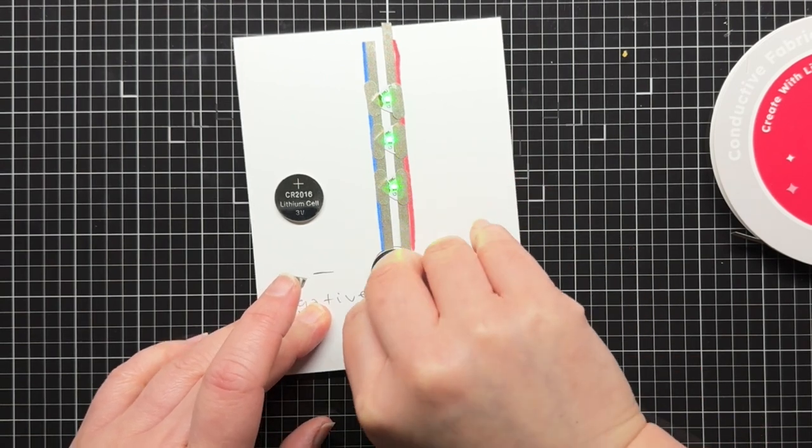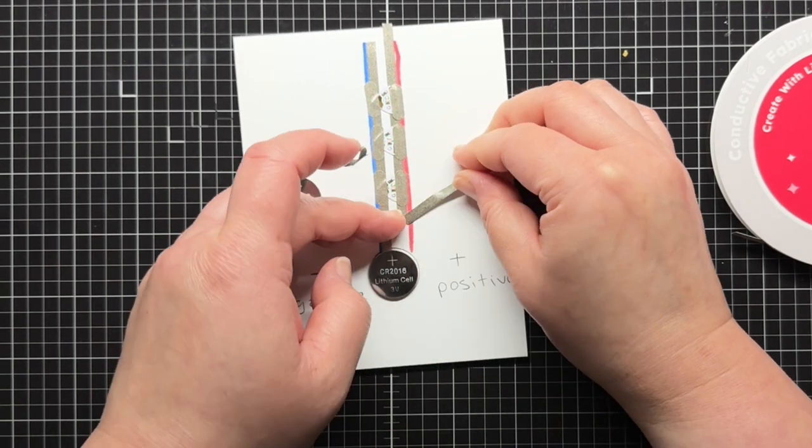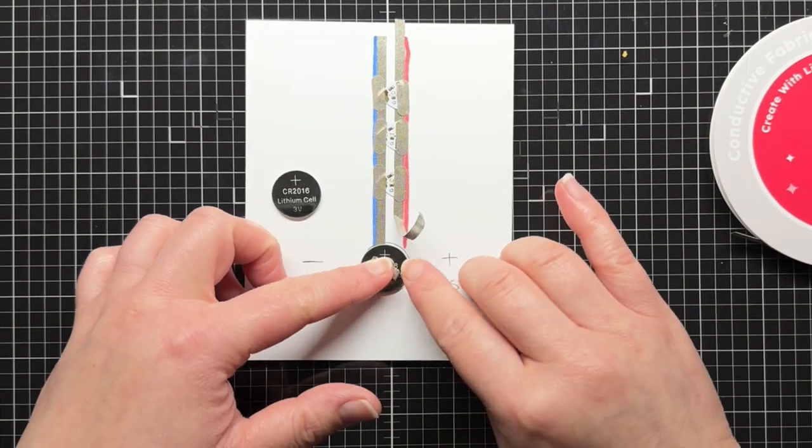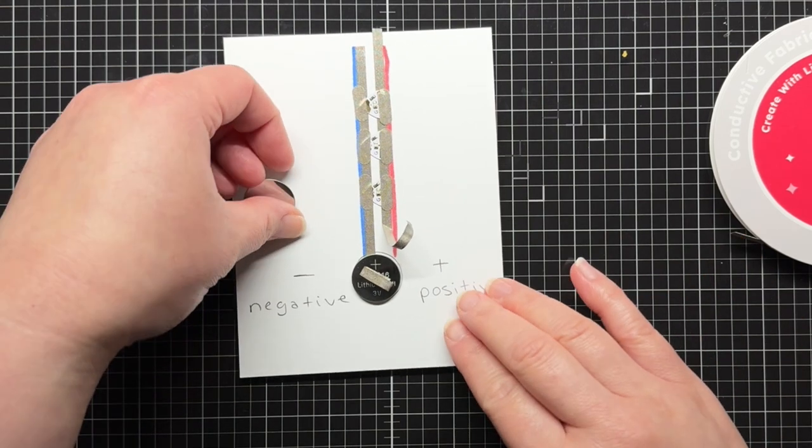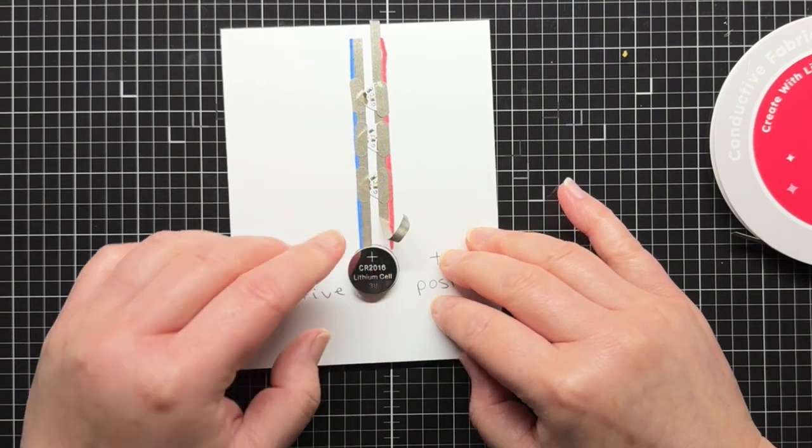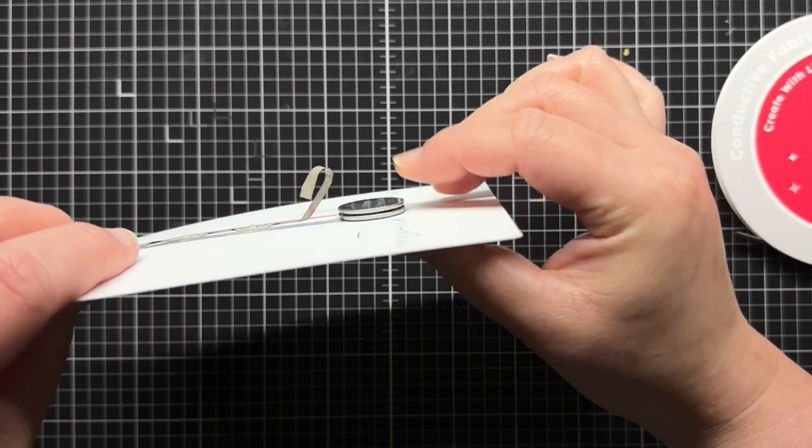To do this, I carefully peel the positive line of tape off of my first battery. Then I use a little scrap of conductive fabric tape to make a loop on top of the battery, and then I stack my second battery on top, positive side up. The loop holds the top battery in place while still allowing the circuit to complete.